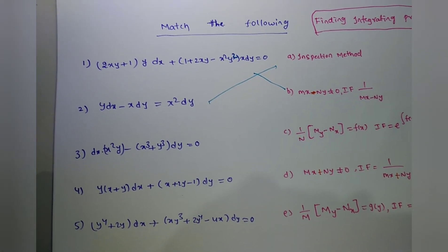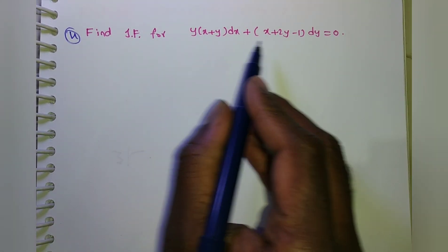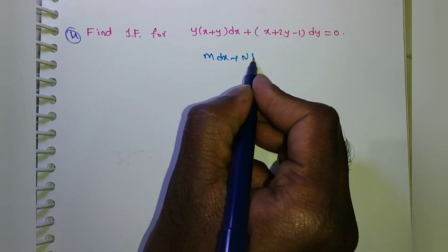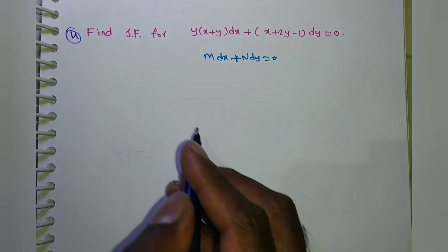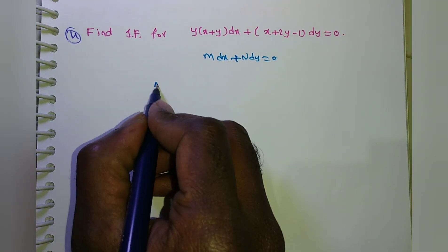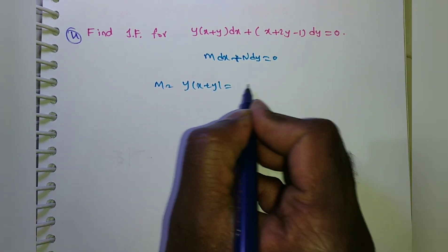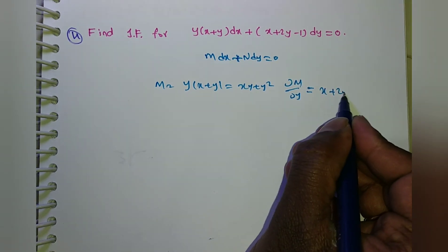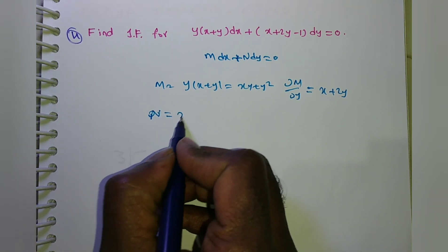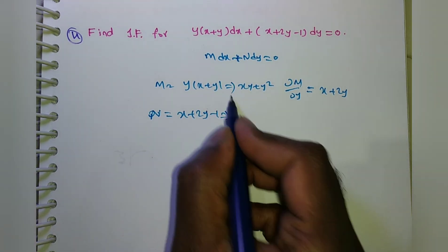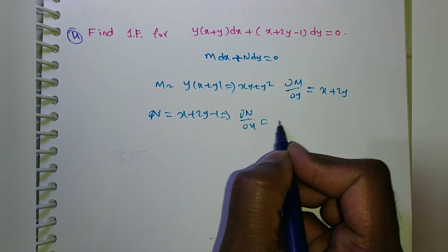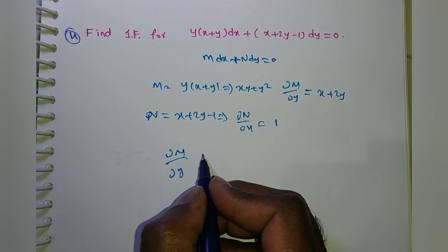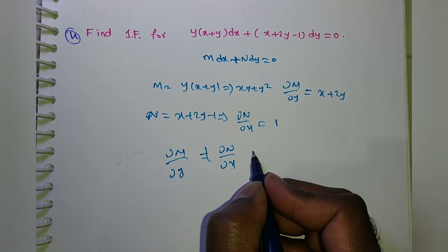Now the fourth problem: y(x + y) dx + (x + 2y − 1) dy = 0. In the form M dx + N dy = 0. So M = y(x + y) = xy + y², and ∂M/∂y = x + 2y. N = x + 2y − 1, and ∂N/∂x = 1. Are both equal? No, so this is non-exact.